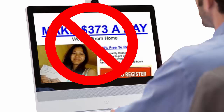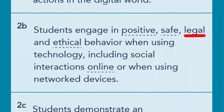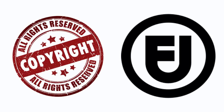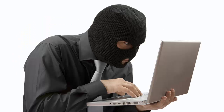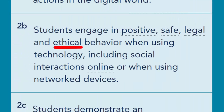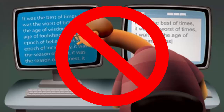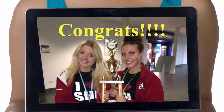By legal behaviors we mean interactions that are mindful of the law — for example, abiding by copyright and fair use, respecting network protections by not hacking them, and not using another's identity. By ethical behavior we mean interactions that align with one's moral code — for example, preventing or not engaging in cyberbullying, trolling, or scamming, avoiding plagiarism, and supporting others' positive digital identity.